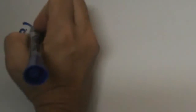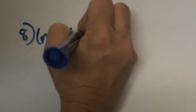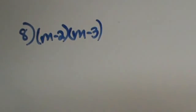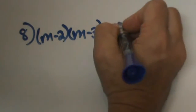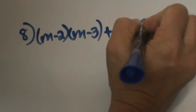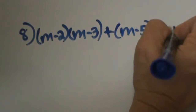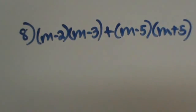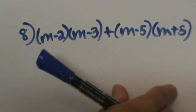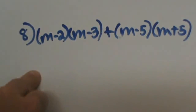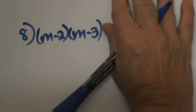I threw in number 8. Number 8 is a binomial times a binomial. We have n minus 2 times n minus 3, and then we are going to add to it — so we do not have to worry about our signs so much on this one because we are adding. We have n minus 5 and m plus 5. We are going to FOIL each part and then add the two answers together, so let's take one part at a time.